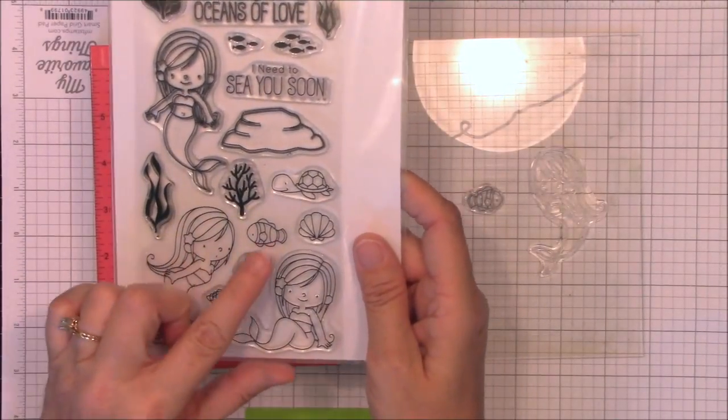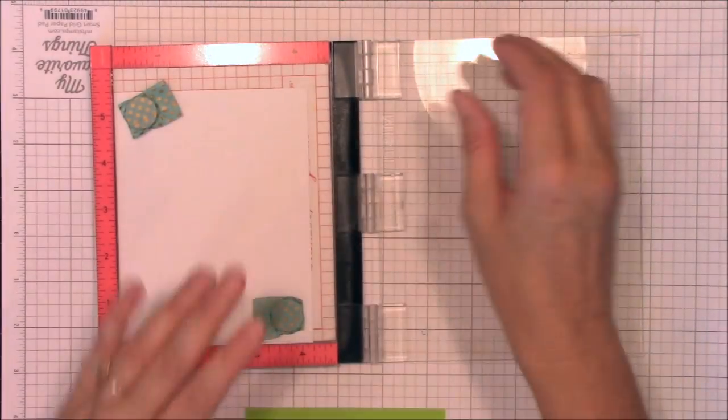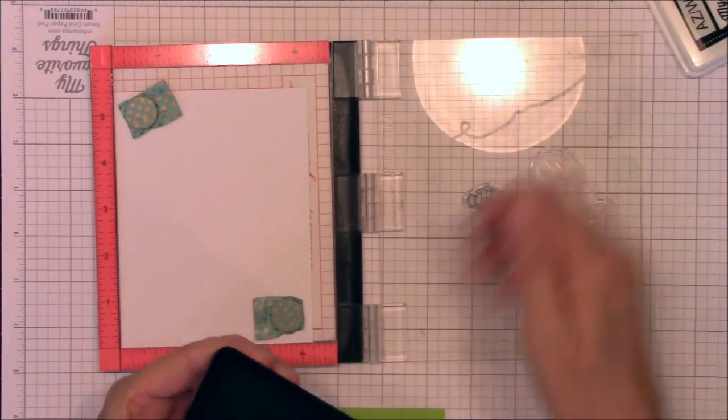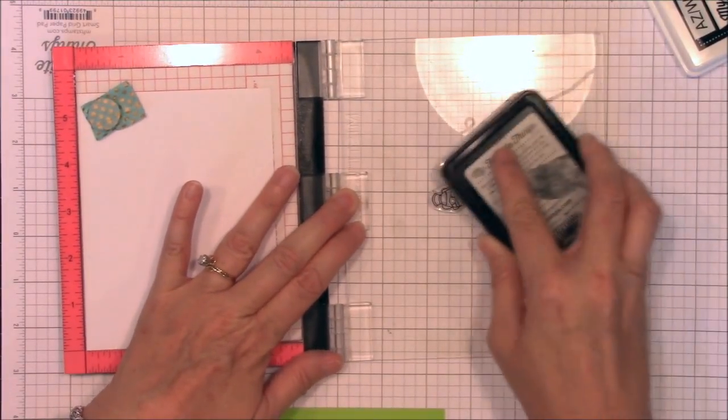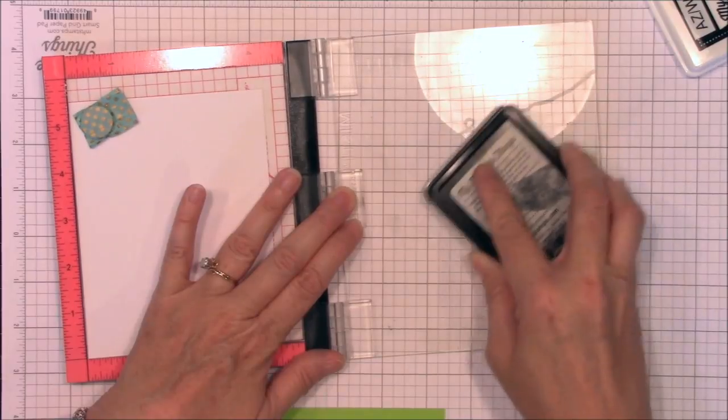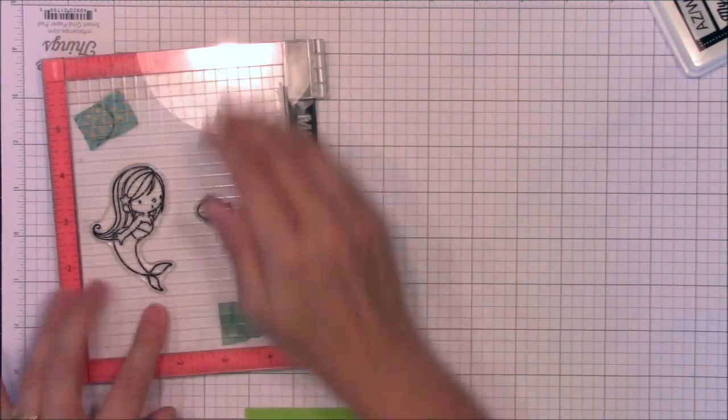I've selected one of the mermaids and the clownfish from the Mermazing stamp set and I'm stamping them onto a white panel using Black Licorice hybrid ink. I'll die cut them in my Big Shot using the coordinating Mermazing dies.